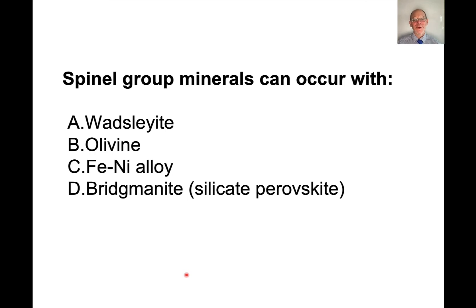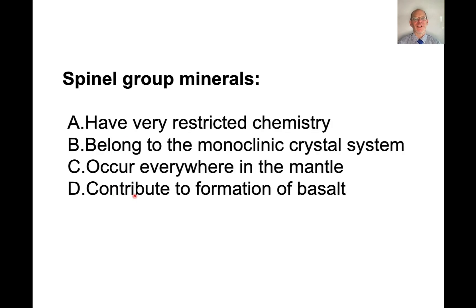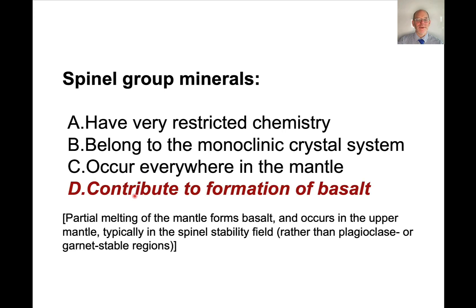Let's have a couple of questions. First: spinel group minerals can occur with which of the following minerals? The answer is olivine. Remember, spinel is in the middle — it doesn't form in the transition zone, in the core, or in the deep mantle. A second, trickier question: spinel minerals contribute to the formation of basalt. At mid-ocean ridges where upwelling occurs, melting is relatively shallow — not as shallow as plagioclase peridotites, but within the realm of spinel peridotites. The melting of the mantle is what creates basalts, typically in the spinel peridotite field.